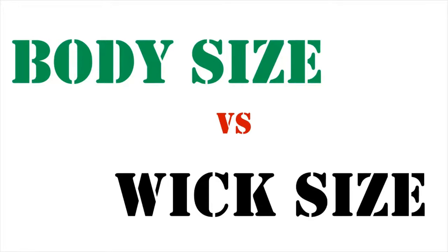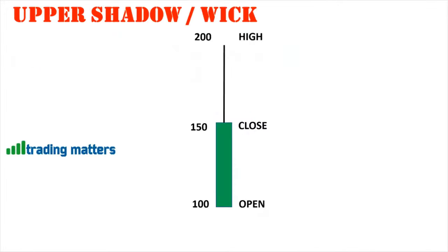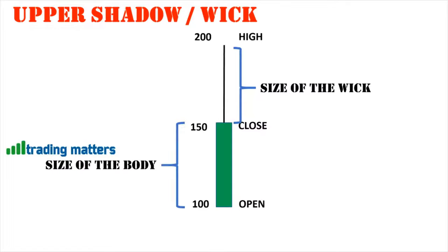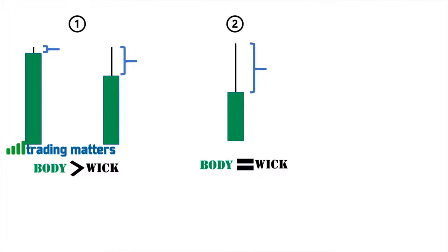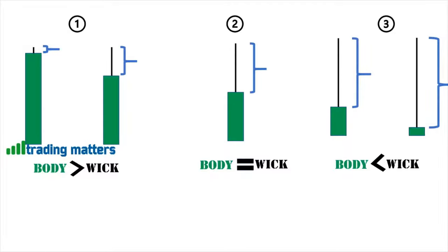Body size versus wick size. The distance between close and high is called the size of the wick, and the distance between open and close is called the size of the body. There are three cases: body greater than wick, body equal to wick, and body less than wick. In the first case, the wick size is very small compared to the body. In the second case, the wick and body are almost the same size. In the third case, the wick size is very large compared to the body.